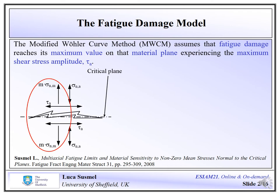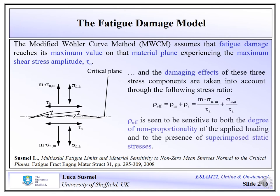Different materials are characterized by a different sensitivity to the presence of non-zero mean stresses. The stress components relative to the critical plane combine together via the stress ratio rho_effective, which contains two terms: rho_M and rho_A. Here rho_M is the ratio between the normal mean stress and the shear stress amplitude relative to the critical plane, whereas rho_A is the ratio between the amplitude of the normal stress and the shear stress relative to the critical plane. This ratio is sensitive to the presence of non-zero mean stresses as well as to the degree of non-proportionality of the applied load history.